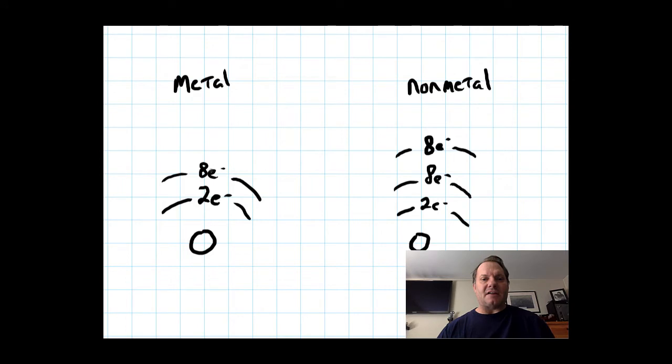And the result of that transfer leaves the metal with a full valence shell but now a positive charge, which is a cation. The non-metal has gained that valence electron, now has a full outer shell, and it has a negative charge. The consequence of that positive and negative charge is that they now attract one another. Electrostatic forces pull them together.